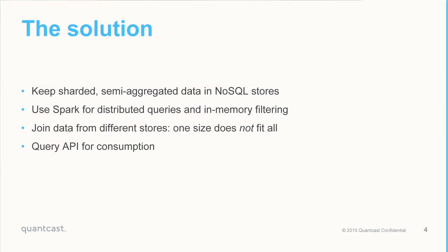To solve this, we came up with an architecture where we don't pre-compute these results. Instead, we have semi-aggregated data that we keep in NoSQL stores, and then we use Spark to distribute queries on top of it and do in-memory filtering. We also realized that our use case did not fit one particular NoSQL store — some are good for range scans, some for point queries — and most NoSQL stores don't support join operations, which is why we started looking at Spark.